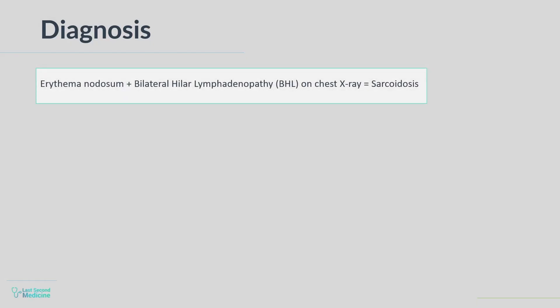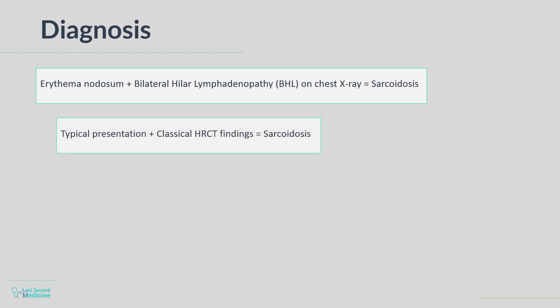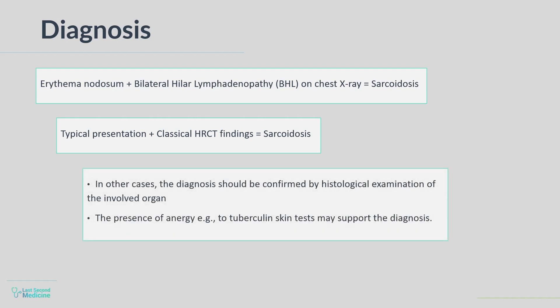The occurrence of erythema nodosum with bilateral hilar lymphadenopathy on chest X-ray is often sufficient for a confident diagnosis without a need for tissue biopsy. Similarly, a typical presentation with classical HRCT features may also be accepted to diagnose sarcoidosis. In other instances, however, the diagnosis should be confirmed by histological examination of the involved organ. The presence of anergy, for example to tuberculin skin tests, may support the diagnosis.